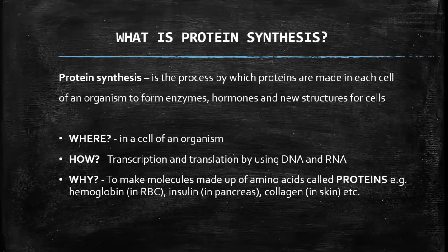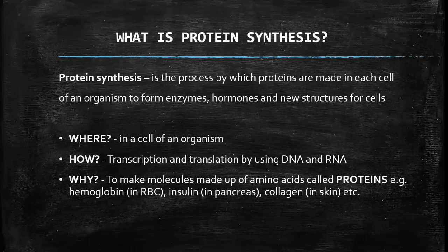Examples of proteins in our bodies include hemoglobin, a pigment found in red blood cells that carries oxygen; insulin, found in the pancreas, which reduces blood sugar levels to protect us from diabetes; and collagen, which is found in our skin. There are many other proteins, but the key point is that protein synthesis is the process whereby we produce proteins.